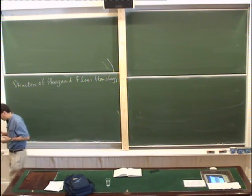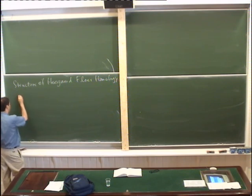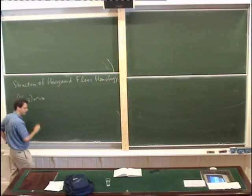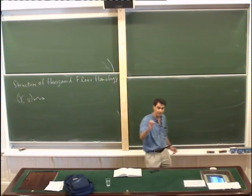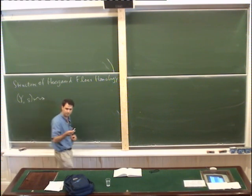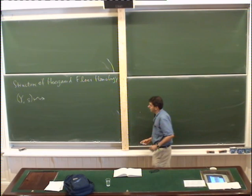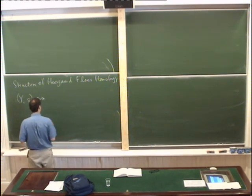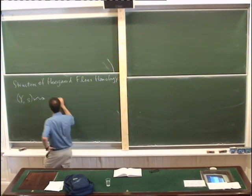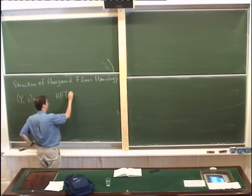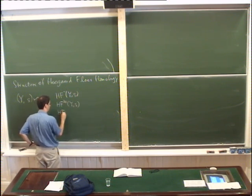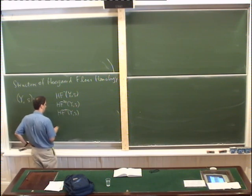Associated to a 3-manifold with a spin-C structure S, we associate a collection of groups. We have a survey paper available in the back if you're interested in picking up a copy. Associated to 3-manifolds equipped with a spin-C structure, there's a collection of abelian groups — HF minus, HF infinity, and HF plus. They have a little bit more structure.